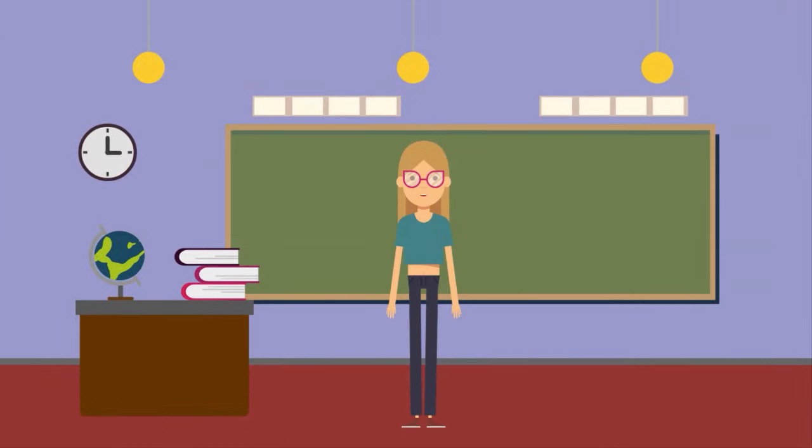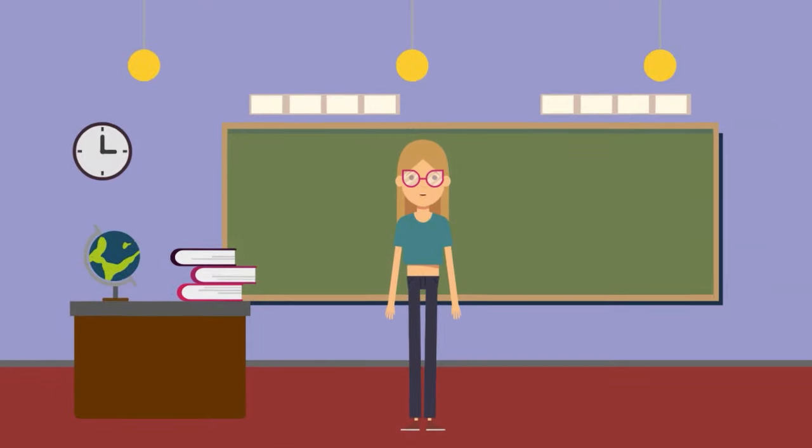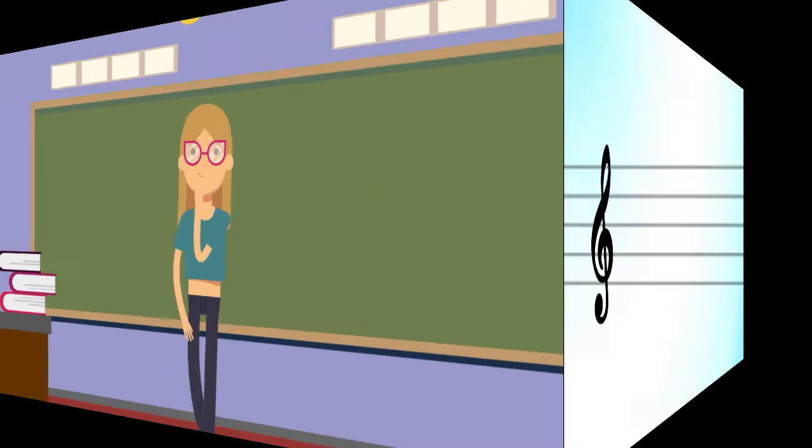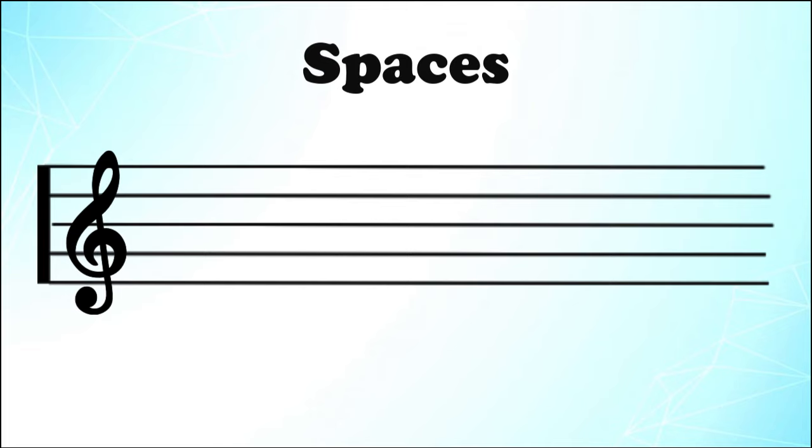Now that you know how to figure out the notes on the lines of the treble clef staff, what do we do for the spaces? Well, there's four spaces, so we're going to assign a letter to each space on the staff. F for the first space, A for the second space, C for the third space, and E for the fourth and final space.